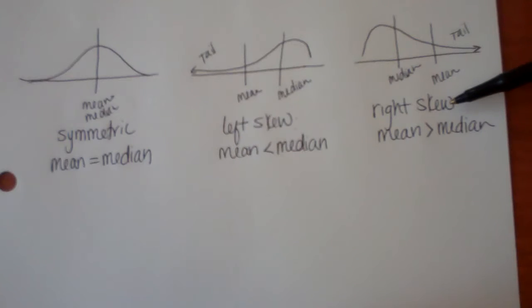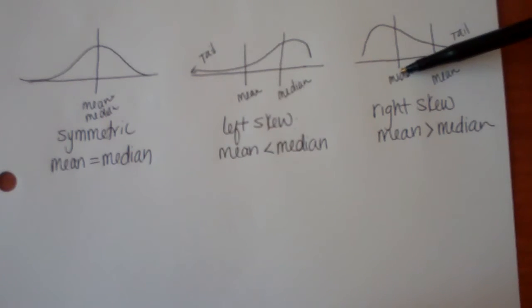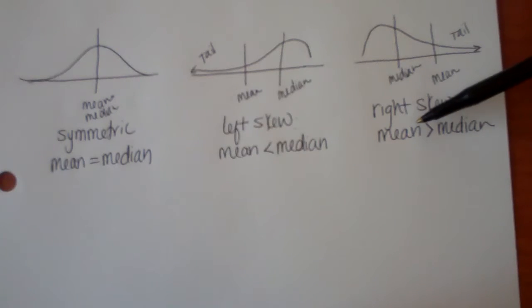In right skew, we see that the tail is pointed to the right. The mean chases that tail because it cannot resist those outliers. And the median is going to be more towards the center of the data, hence making it right skew, the mean is greater than the median.